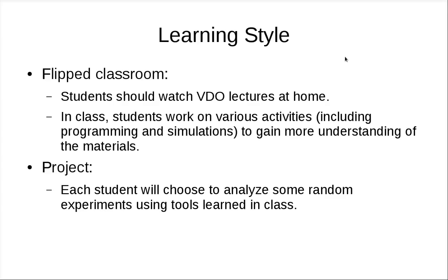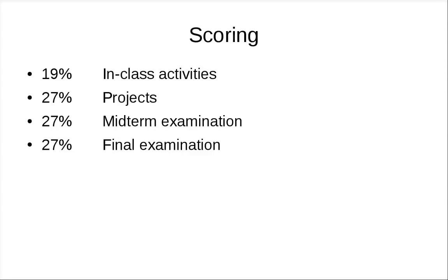In this course, you will learn in a flipped classroom setting. You should watch video lectures at home or before class. In class, we work on some activities — we're not going to have a lot of lecture, maybe some review, but usually you do activities and work with your friends. You also have to work on a project where you pick something, analyze it, and use what we've learned to calculate something related to the course. The scoring is about 20% for in-class activities, with the rest divided equally.